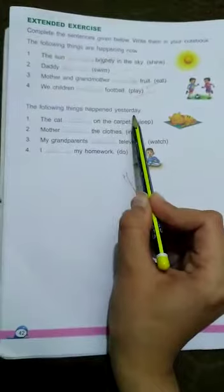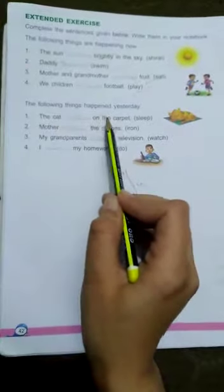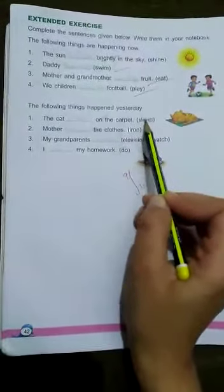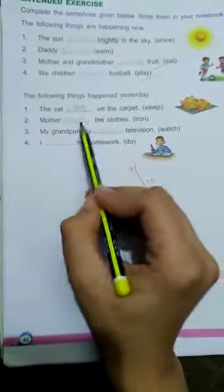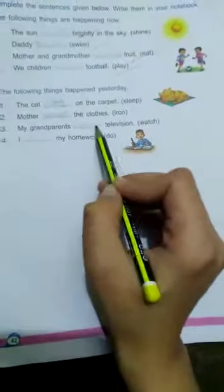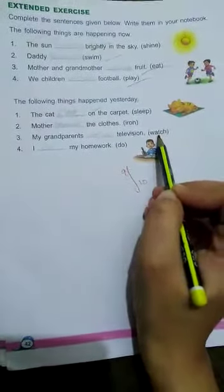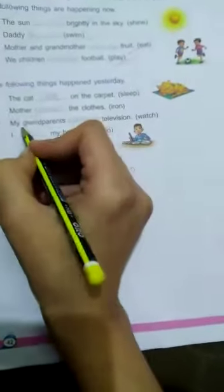The following things happened yesterday. Yesterday ki baat hogi. Number one, the cat slept on the carpet. Sleep hai, kal ki baat ho rahi hai, toh slept ho jayega. S-L-E-P-T. Number two, mother ironed the clothes. I-R-O-N-E-D. My grandparents watched television. Watch hai, toh watched ho jayega. W-A-T-C-H-E-D. Number four, I did my homework. It's past tense ho gaya.